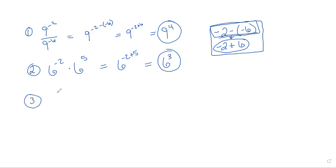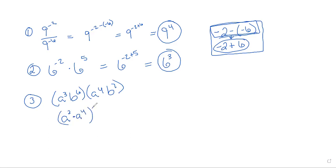Let's go on to the next one. We have a to the third power times b to the sixth power times a to the fourth power times b to the seventh power. This is very similar to the rule we did in question number 2, except we're just going to combine the like terms. Because it's multiplication, we can multiply in any order — that goes back to the commutative property of multiplication. It doesn't matter if we multiply a times b times a times b, or a times a and b times b; we're still going to end up with the same product.